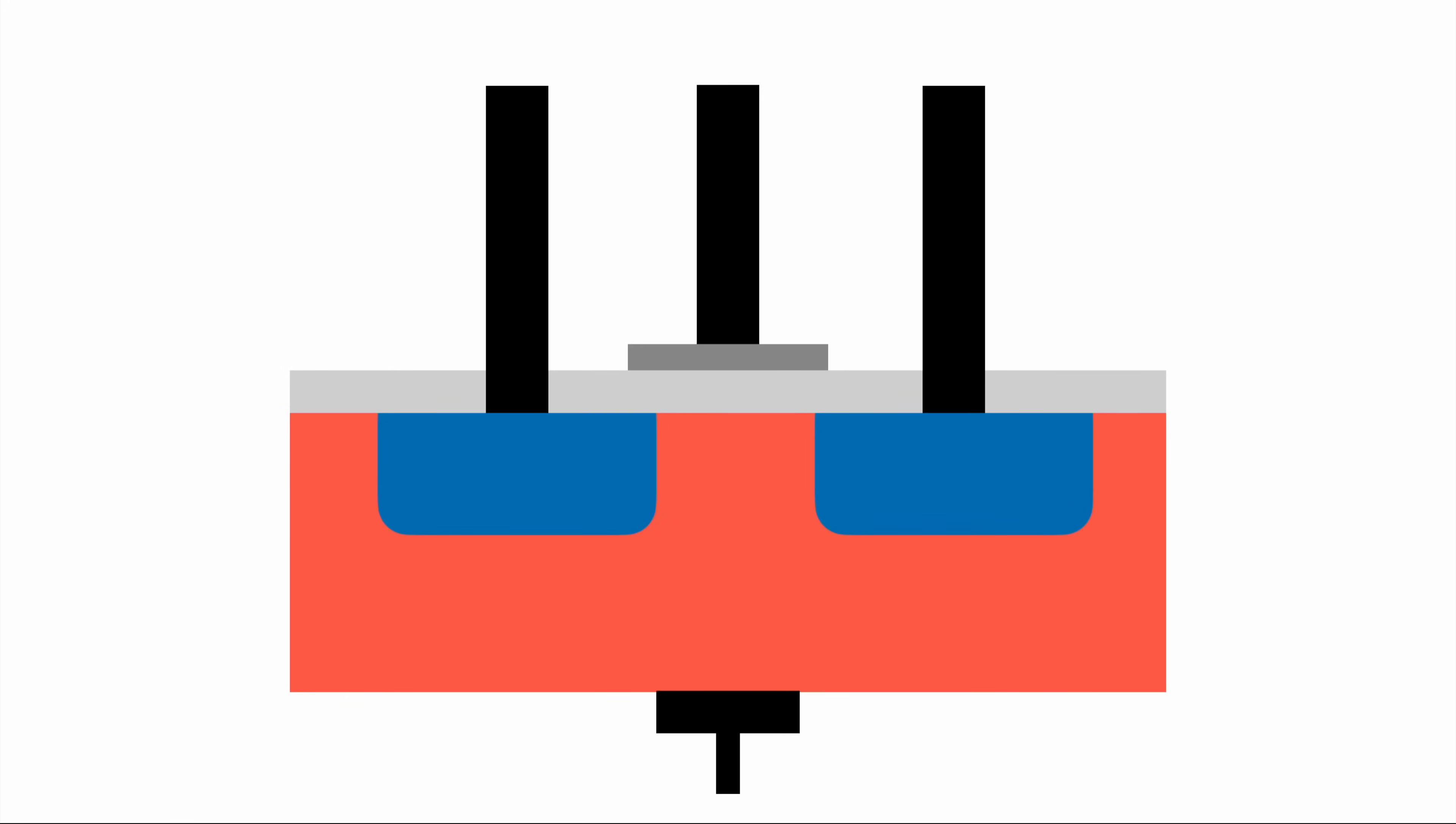Let's dive into the structure of a MOSFET. Looking at this diagram, we have connectors which are black. On the left is the source, on the right the drain, and in the middle the gate. Electrons travel from the source to the drain, enabled by the gate.